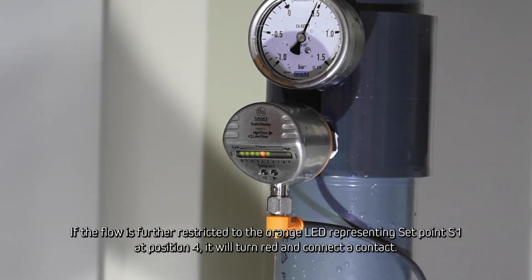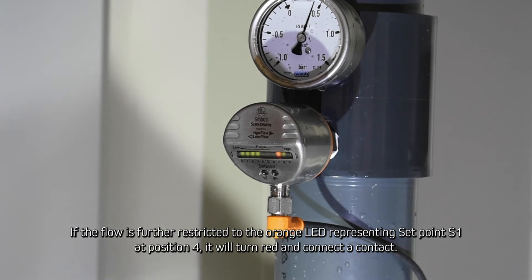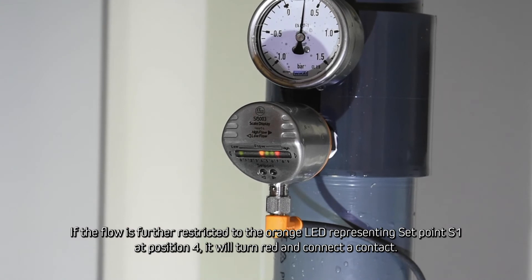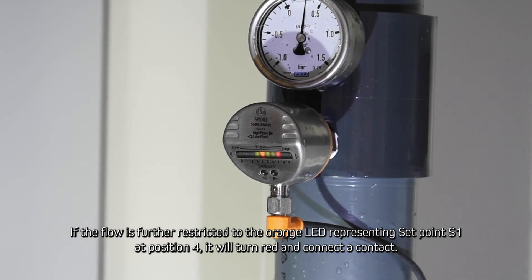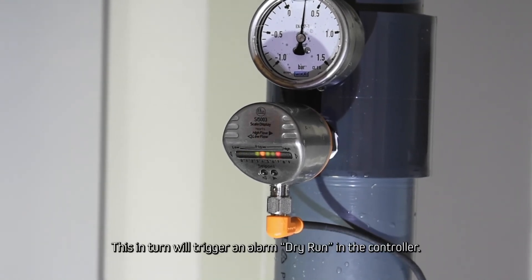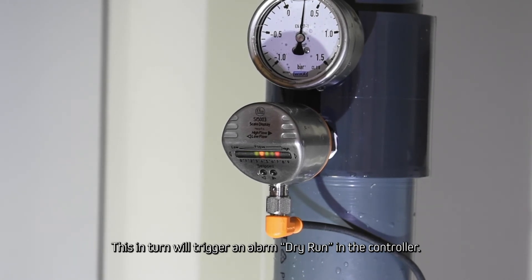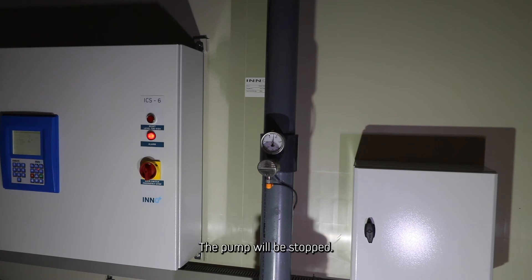If the flow is further restricted to the orange LED representing setpoint S1 at position 4, it will turn red and connect to contact. This will trigger an alarm dry run in the controller, and the pump will be stopped.